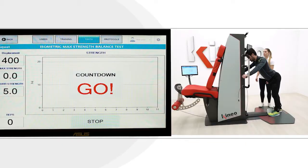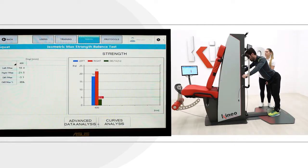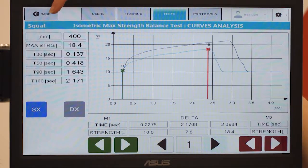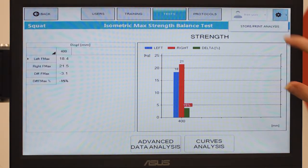Kineo can process the data in histograms for peak isometric values in terms of peak isometric strength of the left side in blue and the right side in red, showing the inter-limb difference in percentage.